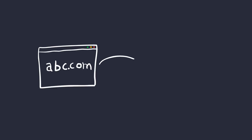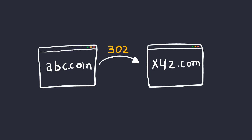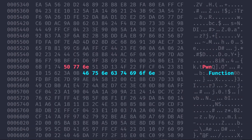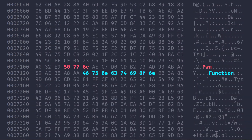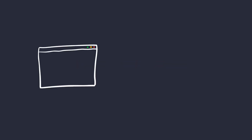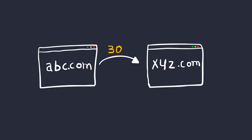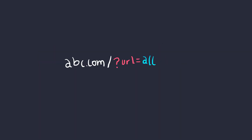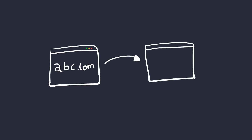Open redirects are simply redirections from one website to another. What could possibly go wrong? You might have seen a URL similar to this: abc.com redirecting to xyz.com. There's a redirection happening to xyz.com as soon as you visit abc.com. If you change xyz.com in the URL to attacker.com, then you'd be redirected to the attacker's website. That's a basic idea of an open redirect — the website happily allows you to redirect to any website on the planet.